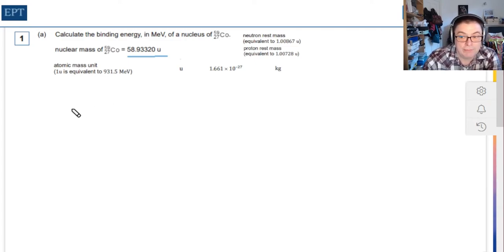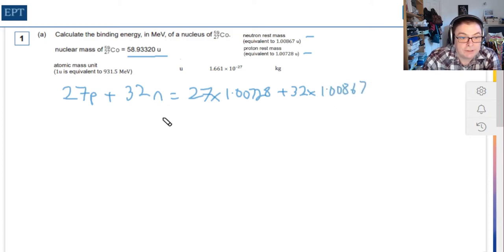That will be 27 lots of the proton mass plus 32 lots, which is the nuclear number minus the number of protons, times the neutron mass. So that's going to be 27 times 1.00728 plus 32 times the neutron mass, which is 1.00867 in atomic mass units.